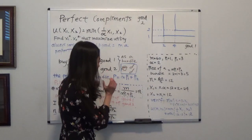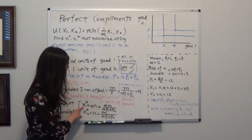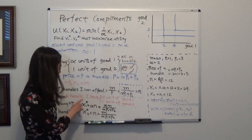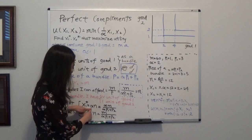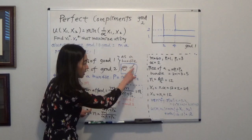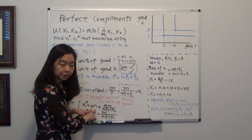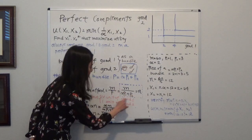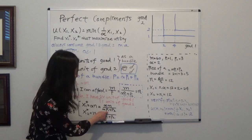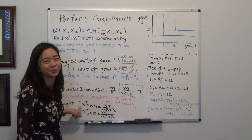What about the spoons of sugar? We know that in each bundle you have alpha spoons of sugar. So your optimal number of spoons of sugar, x1 star, will be equal to alpha — the number of spoons of sugar in your bundle — times the number of bundles you can purchase. So that will be alpha M divided by alpha times P1 plus P2.